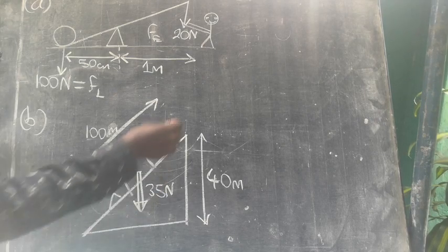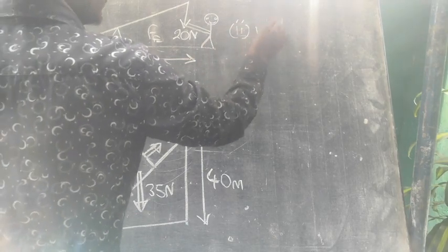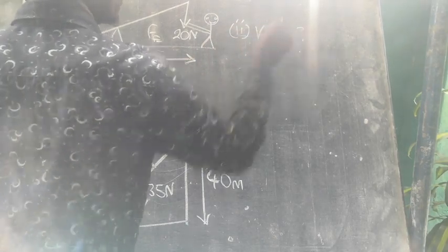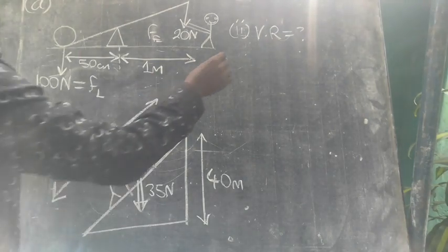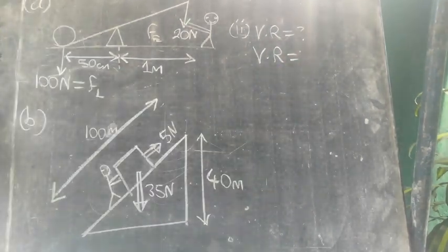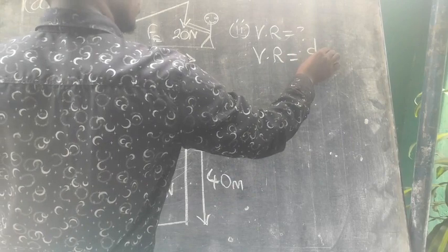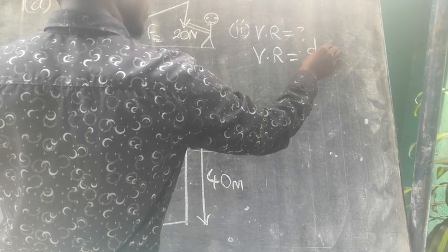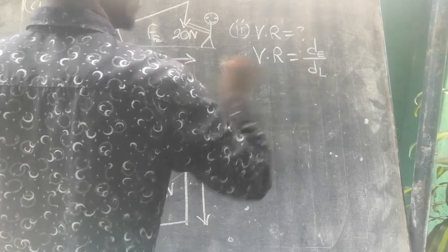Velocity ratio. So now velocity ratio is calculated by, you can give us the formula, how do we calculate velocity ratio. It's distance moved by effort over distance moved by load.